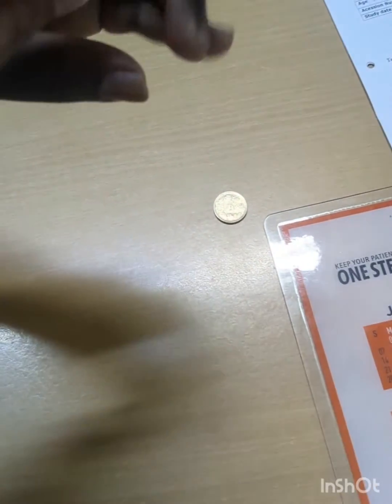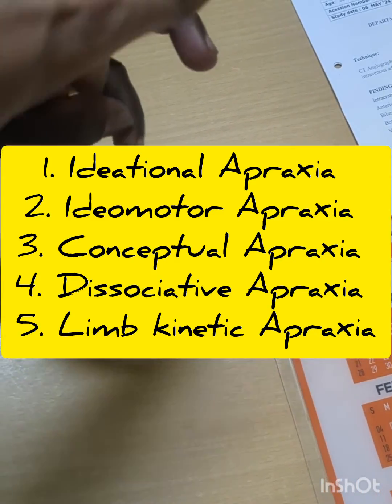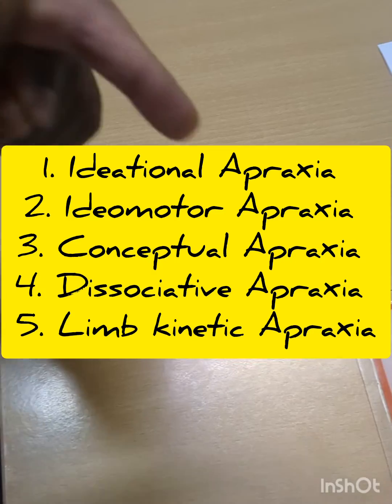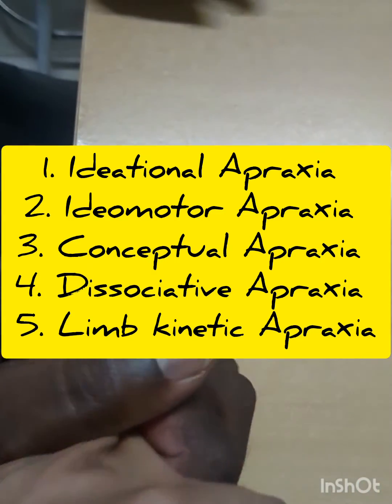There are various types of Apraxias: Ideational Apraxia, Ideomotor Apraxia, Conceptual Apraxia, Limb Kinetic Apraxia, and so many more. This table I have taken from Bradley's Neurology.